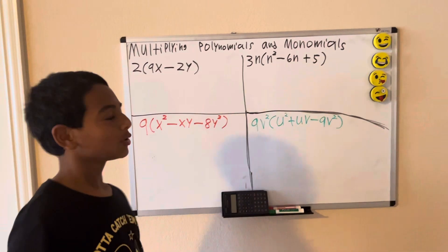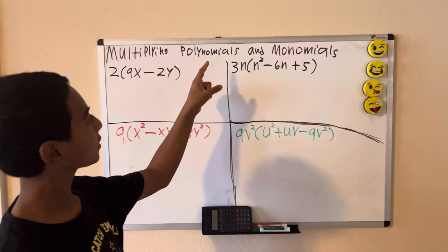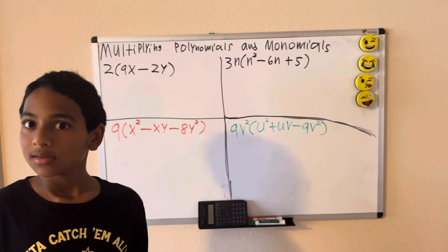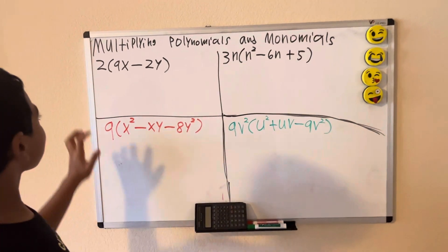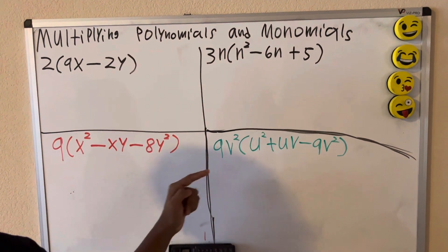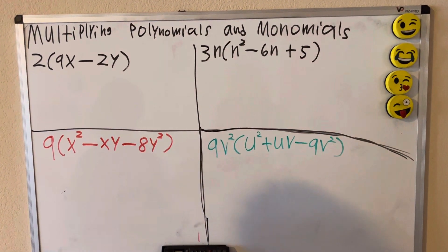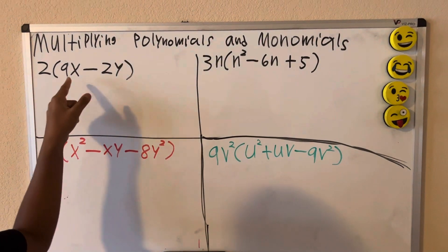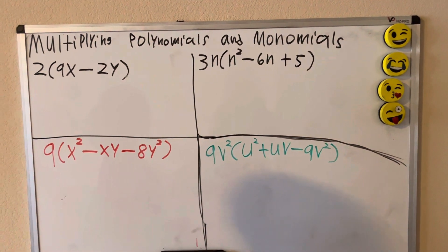In this video, we will be multiplying polynomials by monomials. A monomial is a single term like 2, 3n, or 9v squared. A polynomial has multiple terms like 9x minus 2y and n squared minus 6n plus 5.